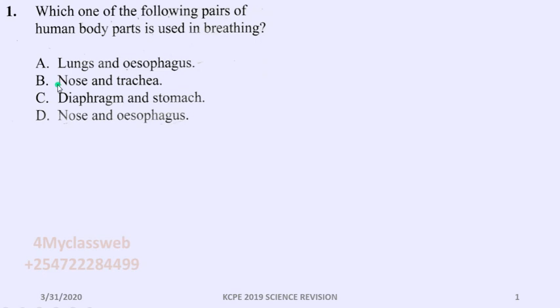If you look at choice B, we've got the nose and the trachea, and I believe this could have been a better choice for that question. The nose is the entry of the air into the trachea, and the trachea itself is a pipe through which air passes into the lungs.